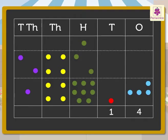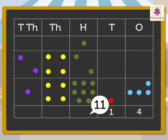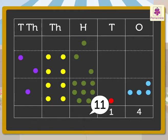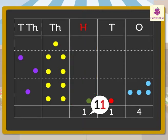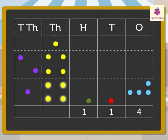Now add the hundreds: one green dot plus two green dots plus eight green dots equals eleven hundreds. Since eleven hundreds equals one thousand and one hundred, we regroup eleven hundreds as one yellow dot and one green dot. Next, add the thousands: one yellow dot plus four yellow dots plus four yellow dots equals nine thousands. Lastly, two purple dots plus one purple dot equals three ten-thousands.